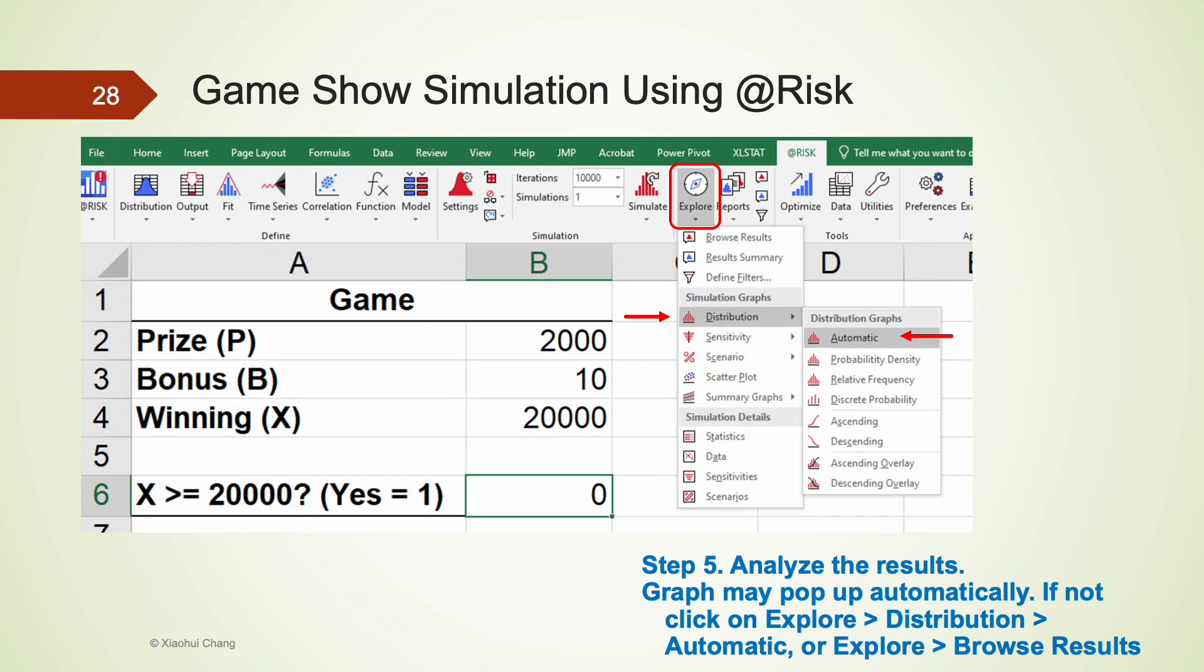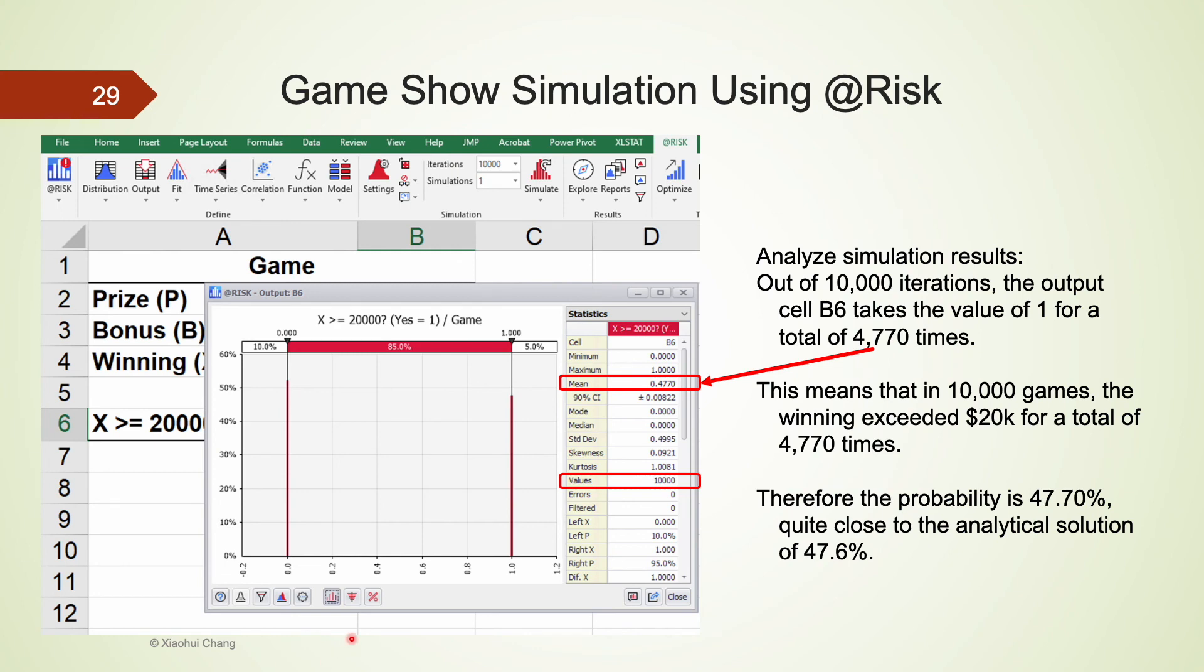After the simulations are all completed, we generate and interpret the reports in step five, that's also the last step. Many times, a graph with summary statistics on the right will pop up. If not, click on explore, distribution, and then automatic. Alternatively, click on explore, then browse results to see this. This graph and summary statistics created are very useful for decision making. You could explore more by clicking on explore reports on the very top.